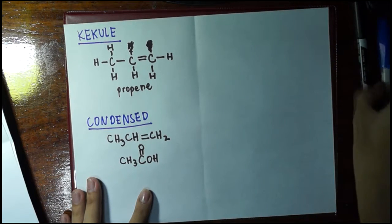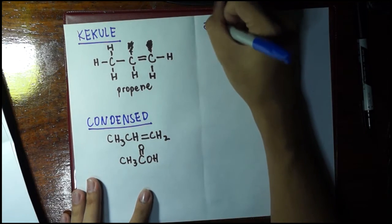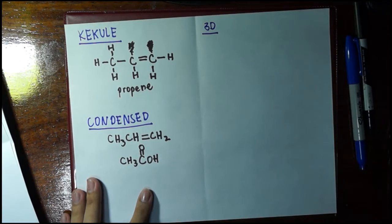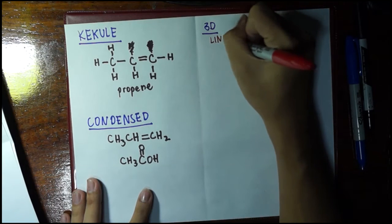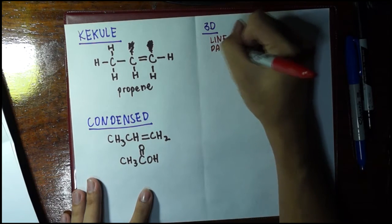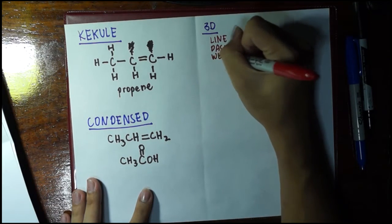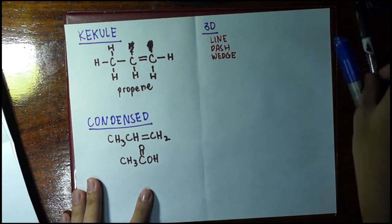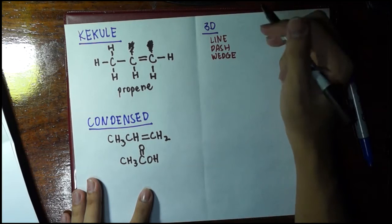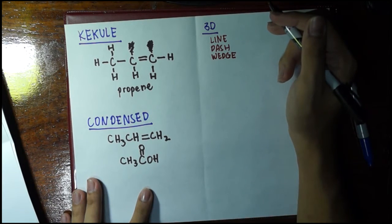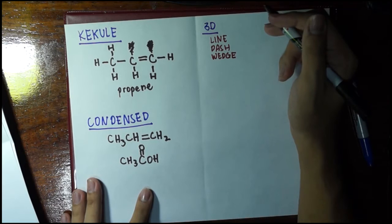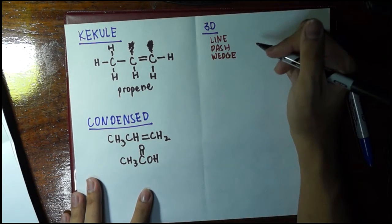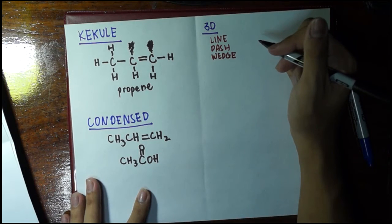Now, the third would be the 3D structure. Here we use three types of lines: the simple line, the dash, and the wedge. It's all about the dimension. The difference is there is a bond that's projected to face you, a bond projected to face away from you, and lines projected to be at the plane of the paper.